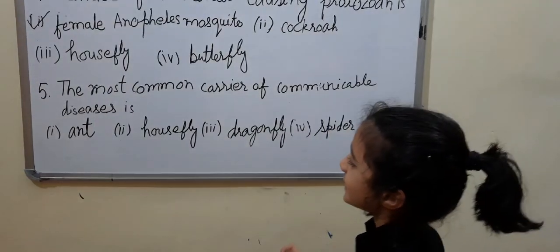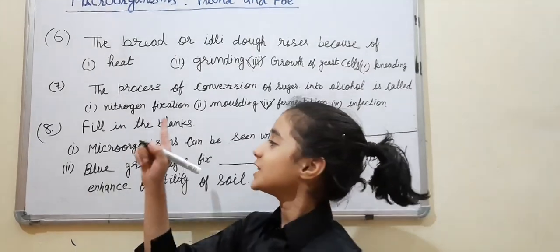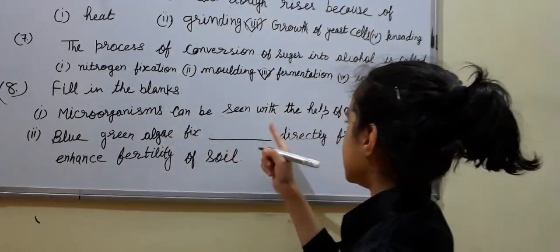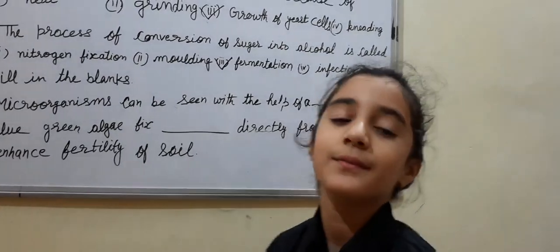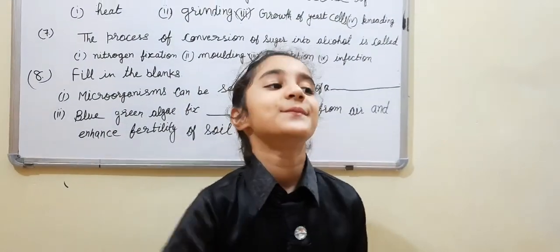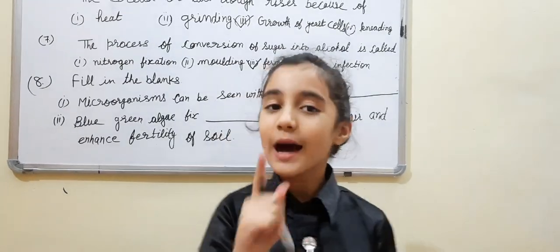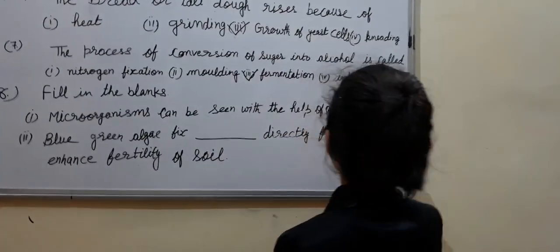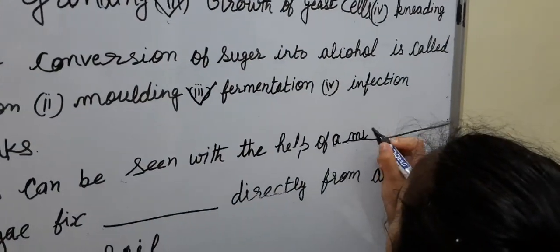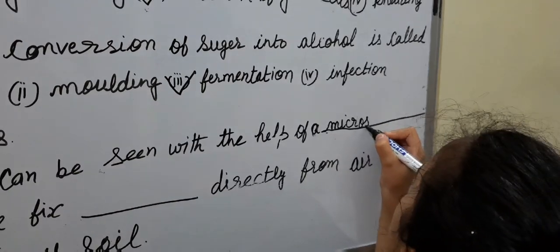The correct answer is housefly. Question number 8, fill in the blanks: Microorganisms can be seen with the help of a... Your time starts now. The correct answer is microscope.